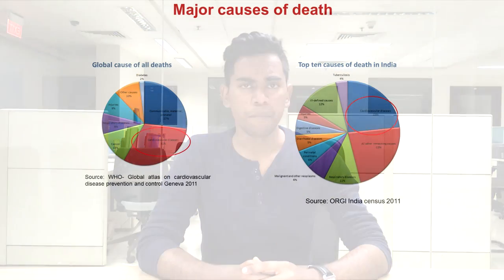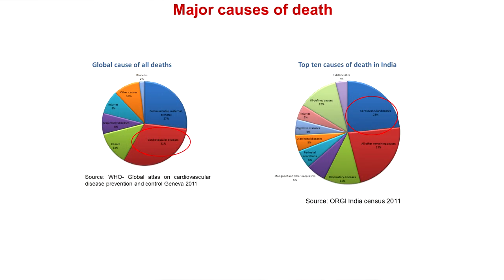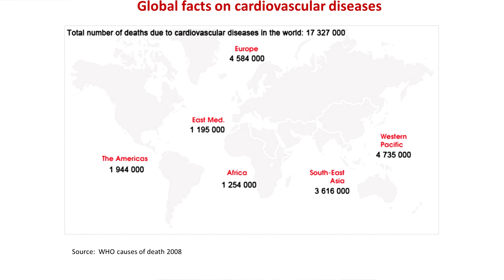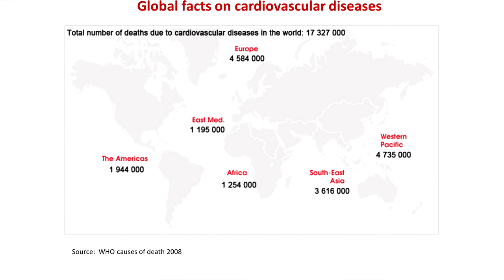As we know, the major causes of death all over the globe generally top the list of cardiovascular diseases. Cardiovascular disease is one of the major causes of death in India as well. CVDs are majorly causing approximately 70 million deaths all over the globe. There are several forms of cardiovascular diseases which involve coronary artery disease, stroke, rheumatic artery disease, and other cardiovascular diseases.